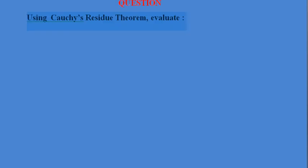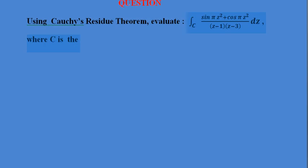Students, in this video we will evaluate a complex integral using the residue theorem. The question is: using Cauchy's residue theorem, evaluate the integral of (sin πz² + cos πz²) / ((z−1)(z−3)) dz, where C is the circle |z−1| = 1.